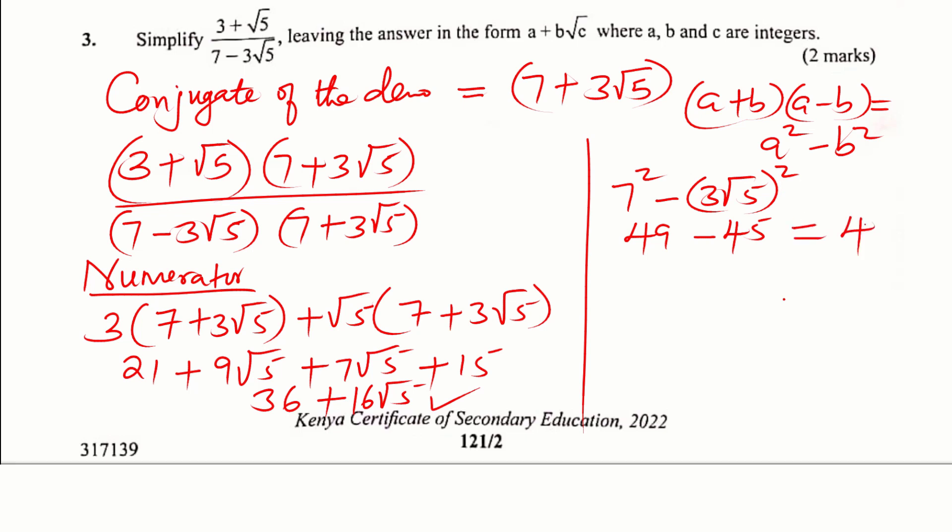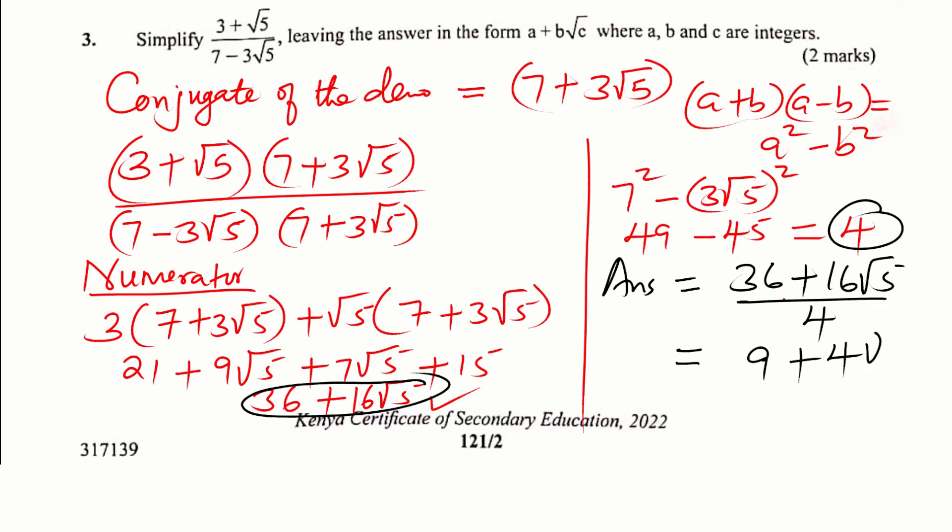So now we have the numerator and the denominator, so therefore the solution will be 36 plus 16 root 5 divided by 4. Just divide everything by 4. That is 6 divided by 4, you get 9, plus 16 root 5 divided by 4, this will give 4 root 5. And that is the solution in the form of a plus b root c.